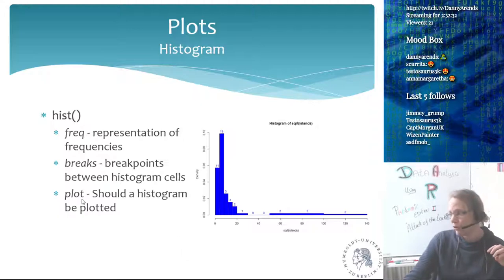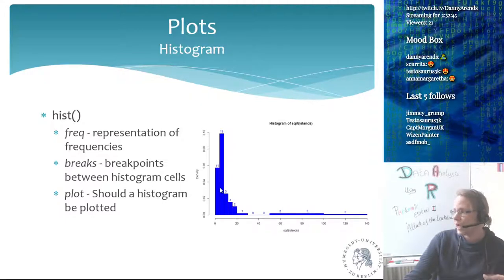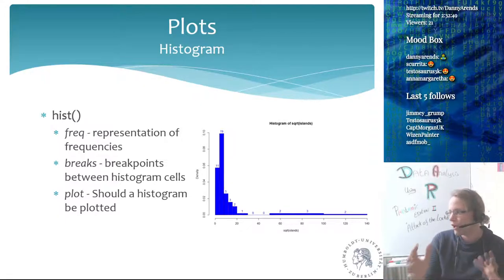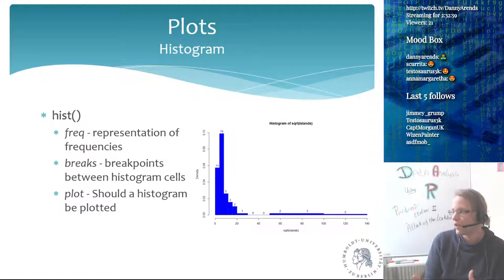The histogram function has a plot parameter. If you set plot=FALSE, it will not draw the plot but will return the values — the number of observations in each group. This is sometimes very handy if you want to subdivide your data into sections: you can put the return of the histogram function into a variable and use it later.